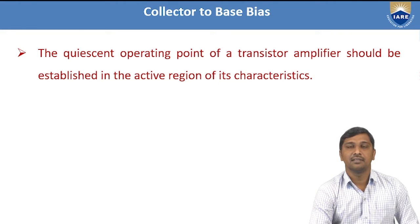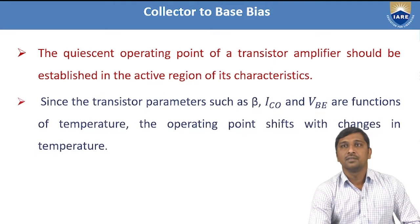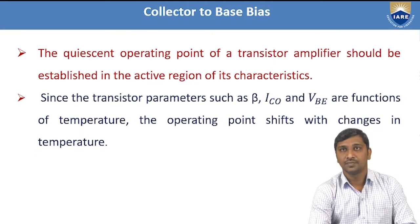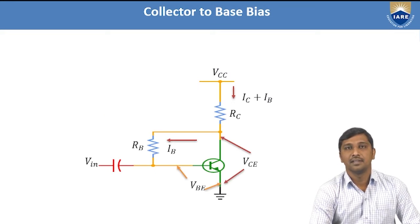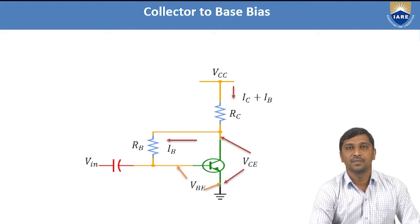That is why today we are going to discuss another biasing methodology called collector-to-base bias. Coming to collector-to-base bias: in fixed bias, the base resistance is biased from a fixed voltage source. In collector-to-base bias, the base resistance is removed from the constant voltage source and is instead biased through the collector terminal to the base terminal.